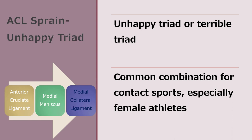ACL sprain and the unhappy triad. The unhappy triad, also known as the terrible triad, is a complete or partial tear of the anterior cruciate ligament, medial collateral ligament, and the medial meniscus all at the same time, resulting from a single knee injury. These three structures are commonly combined in injury in contact sports, especially for female athletes. Therefore, if you suspect a contact ACL mechanism, evaluate the medial meniscus and suspect medial collateral ligament involvement as well.